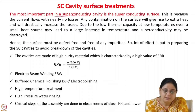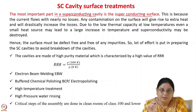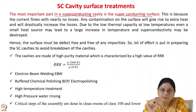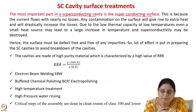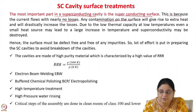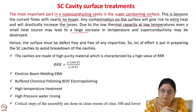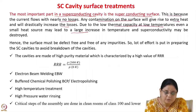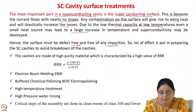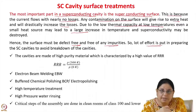The most important part in the superconducting cavity is the superconducting surface. The RF residual resistance has two components: R_BCS and R_residual. R_residual depends on the cavity surface and the impurities in the material, so great importance must be given to the surface. The current flows on the surface with nearly no losses, and any contamination will give rise to extra heat and drastically increase losses. Due to low thermal capacity at low temperatures, even a small heat source may lead to a large temperature increase and destroy superconductivity. The surface must be defect-free and free from any impurity.